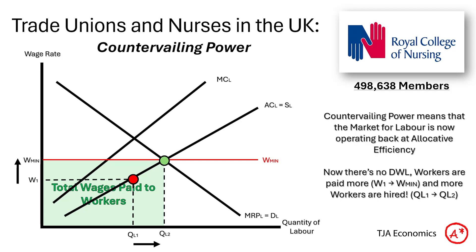So whilst the monopsonist is trying to force wages down, the trade union is forcing them up. They meet in the middle at allocative efficiency at Wmin and QL2. Here there's no more deadweight loss, the workers are paid more, the green box has grown, and more workers are hired as well — from QL1 to QL2.